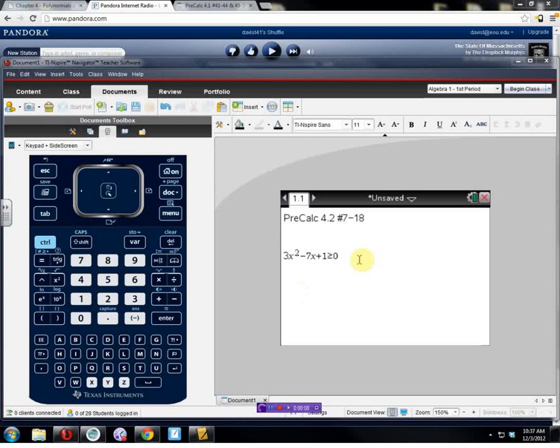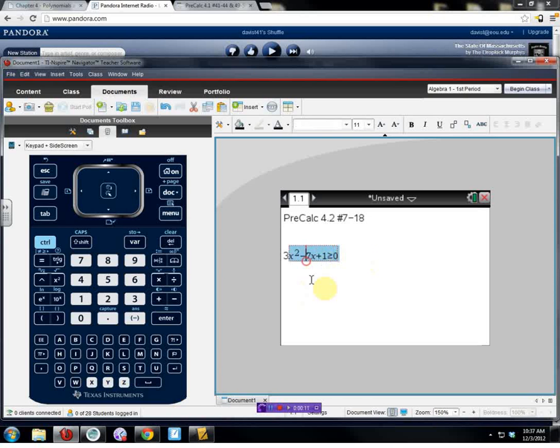We're going to deal with ones that look like this right here, where we have 3x squared minus 7x plus 1 is greater than or equal to 0. And we're going to interpret what that means and also put our answer in interval notation form.